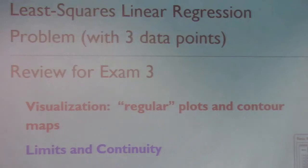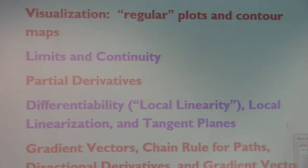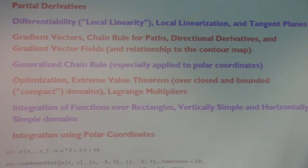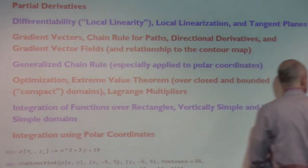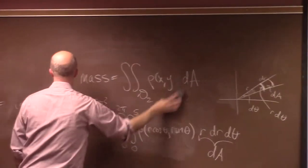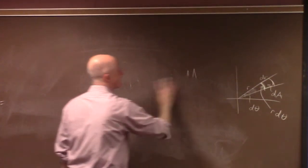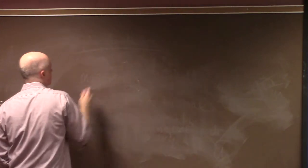With only a few minutes left, here's what's on Exam 3: essentially all of Chapter 14, plus the first three and a half sections of Chapter 15, skipping Section 15.3. I'll add more examples to the Moodle notes before posting. Let me spend the last two minutes emphasizing gradient vectors.